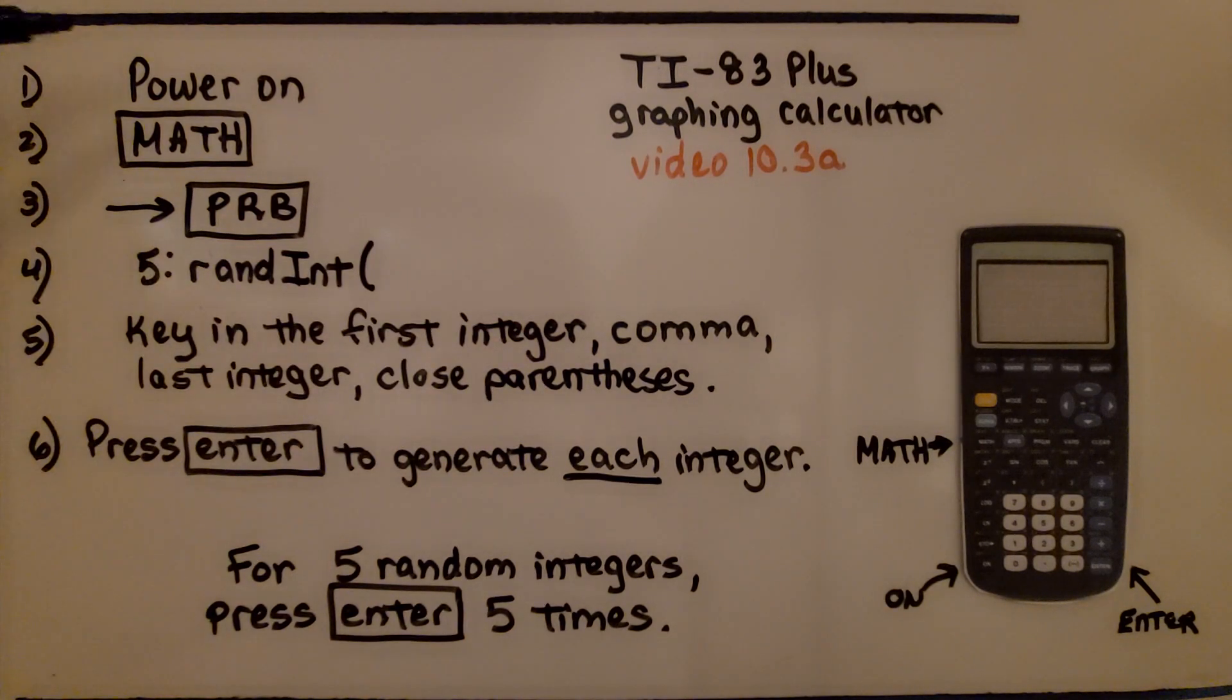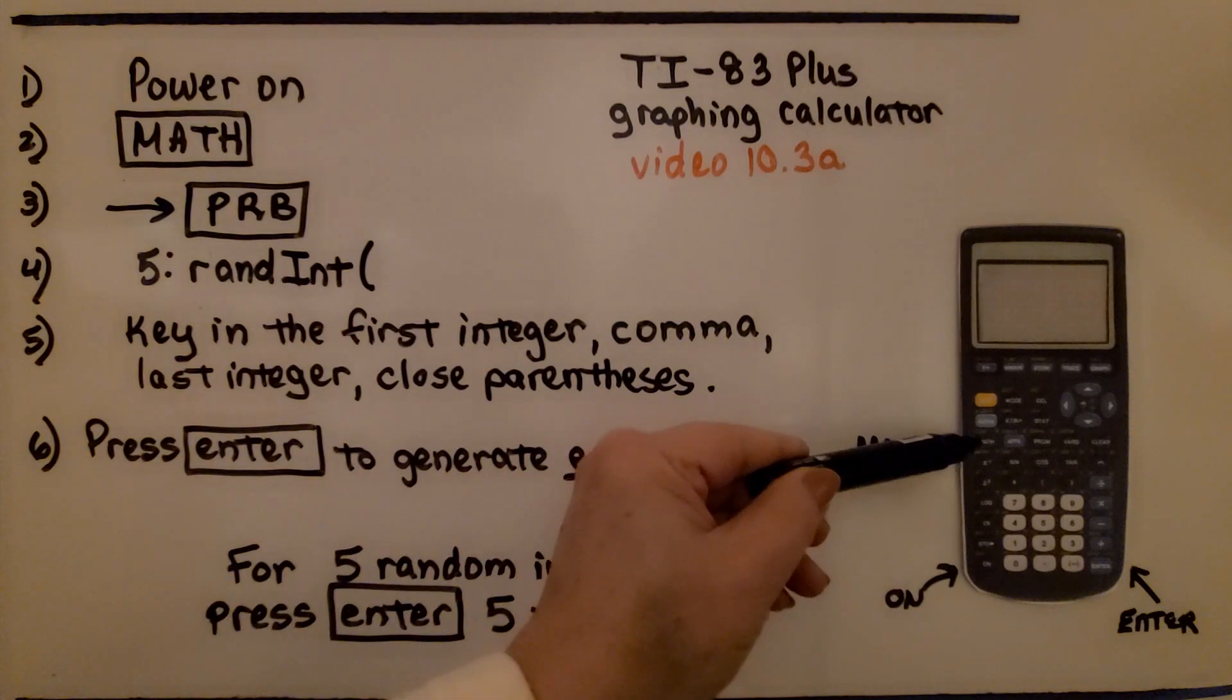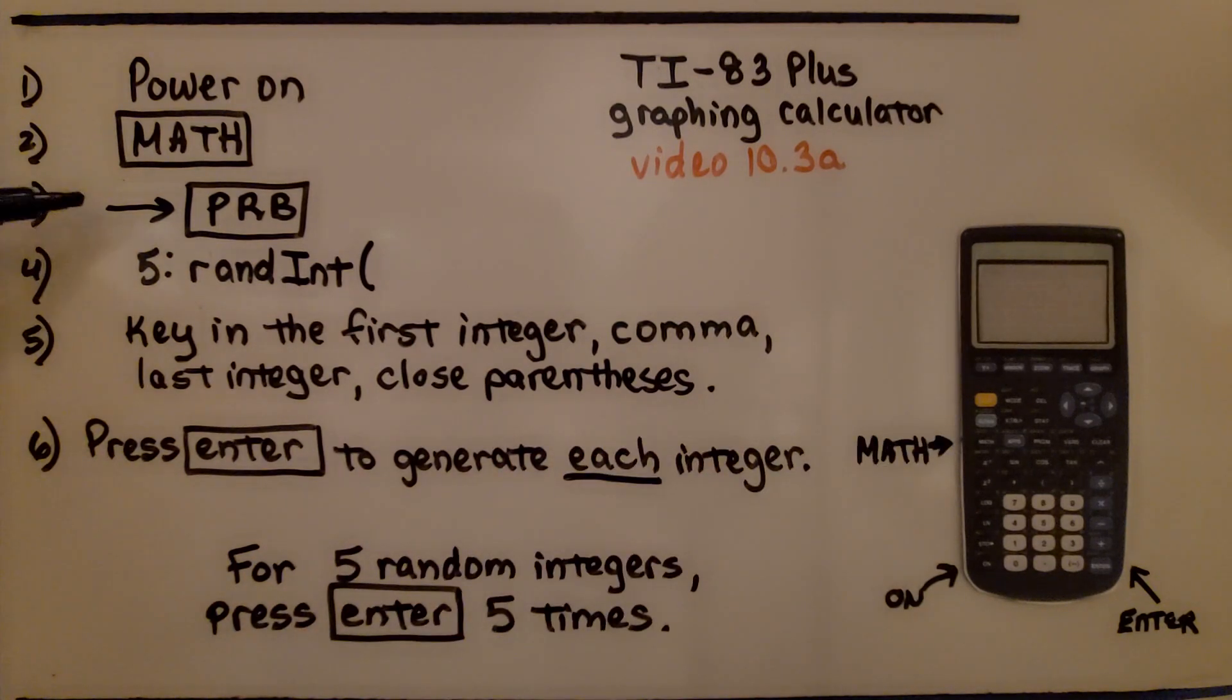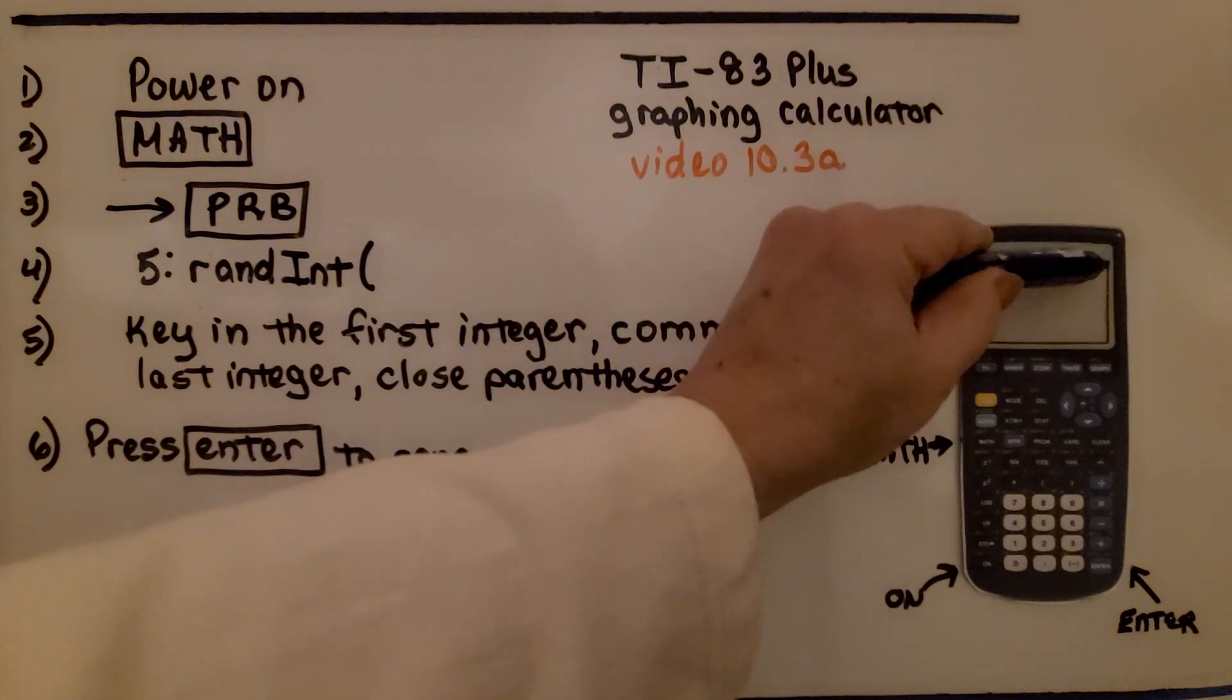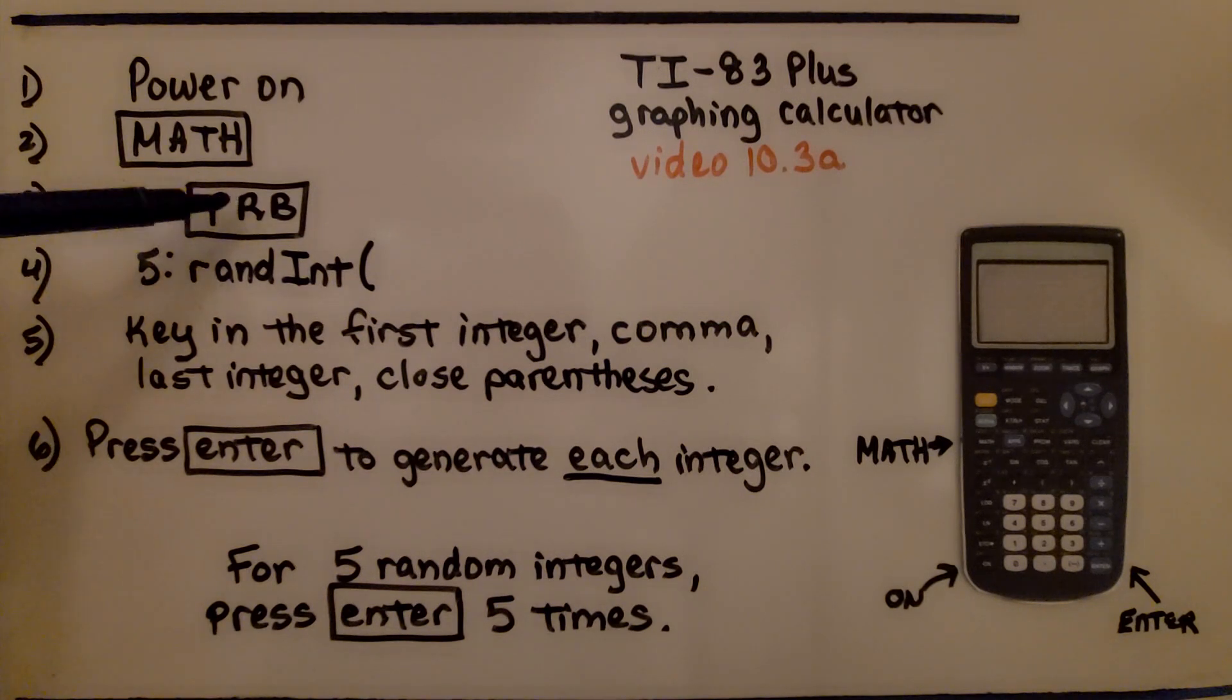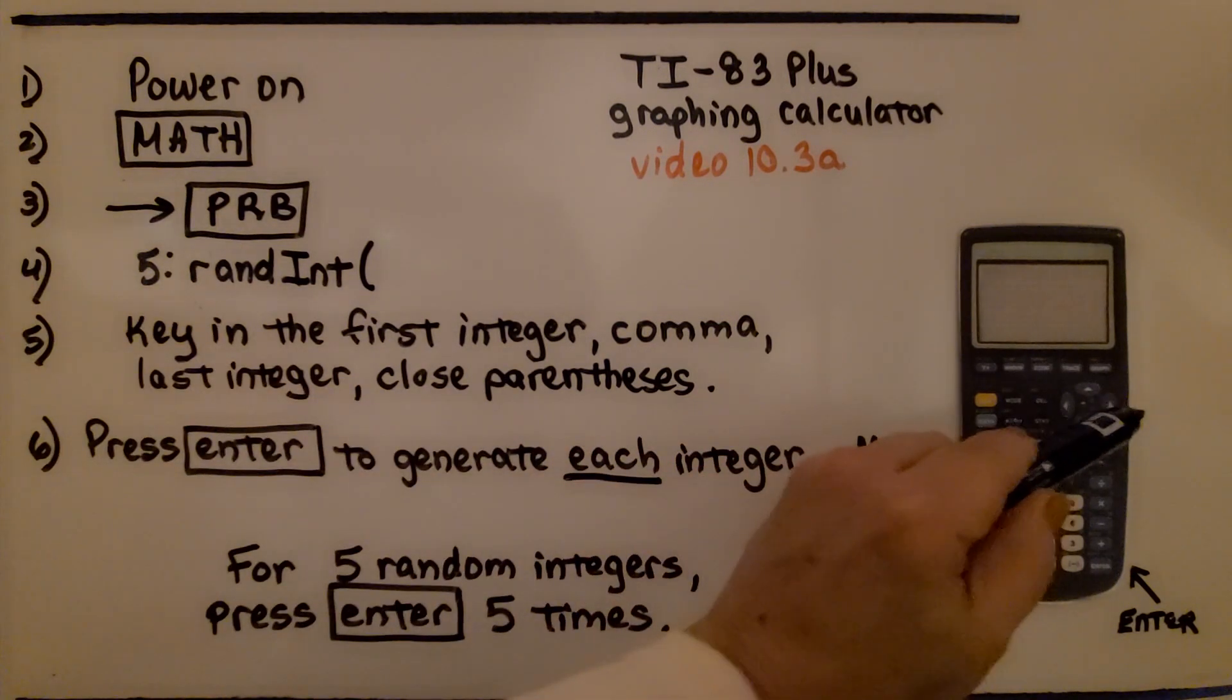So if you remember, the first thing we did was we turned the power on, and the power button is right down here. Then we hit the math button, which is right here. And we saw some options come up along the top, and on the far right side was PRB, and we scrolled to the PRB with this side button.